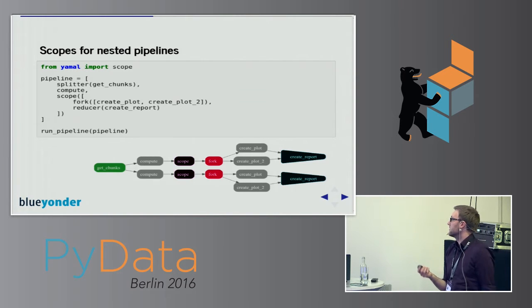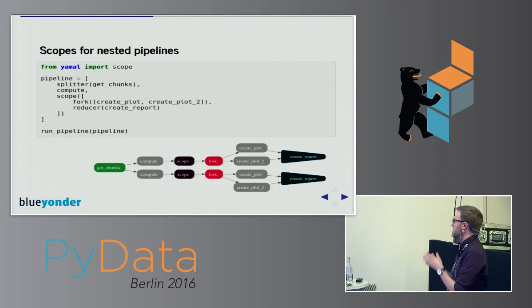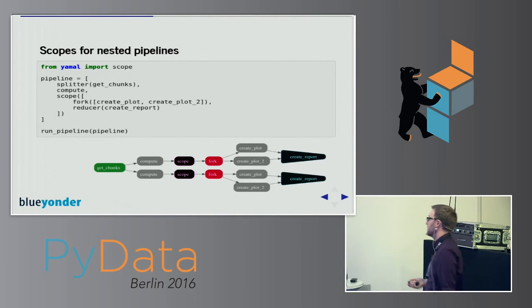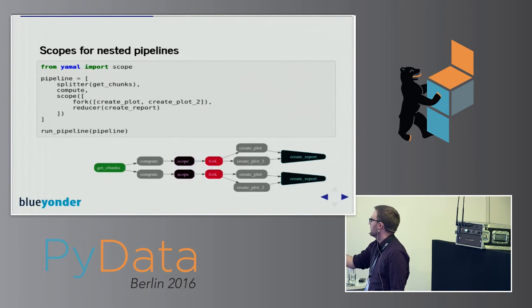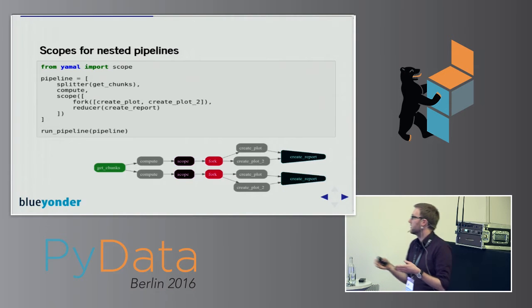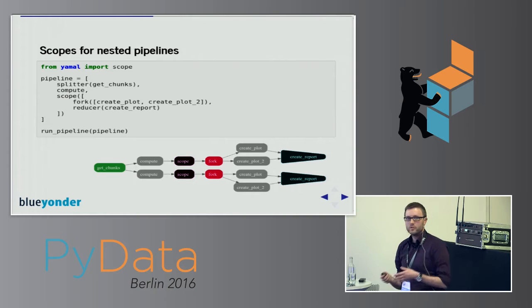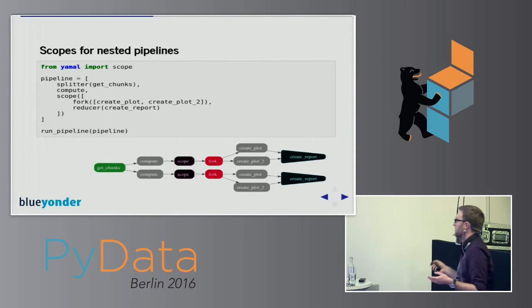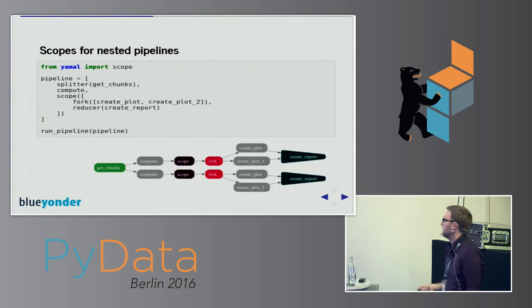When we have reducers, another essential thing you need is something like scopes. Before, the single reducer just took all the data and put it into a single report, but that's not always what you want. If you want to create a separate report for each chunk, you need to tell exactly how much a particular reducer should join. The fork statement and the reducer get a scope, which tells Yamal to only join those data paths for each chunk, making it easy to nest pipelines.